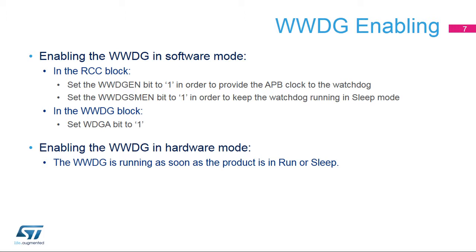The WWDG can work either in hardware or software mode. In software mode, the application needs to enable the APB1 watchdog clocks via the RCC and set the bit WDGA to 1 in the WWDG in order to enable the watchdog. Note that once the watchdog is enabled, the application cannot disable it — only a system reset can disable the watchdog clock. The low-power enable bit can be set as well if the application wishes to keep the window watchdog activated even if the product is in sleep mode. In hardware mode, there is no need to enable the watchdog. The WWDG counts down when the product is in run or sleep, and the bits WWDGEN and WWDGSMEN are forced to 1 by the hardware.